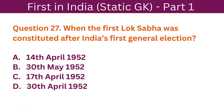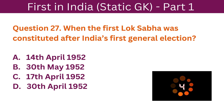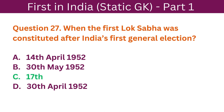Question 27: When was the first Lok Sabha constituted after India's first general election? A. 14th April 1952. B. 30th May 1952. C. 17th April 1952. D. 30th April 1952. The correct answer is C. 17th April 1952.